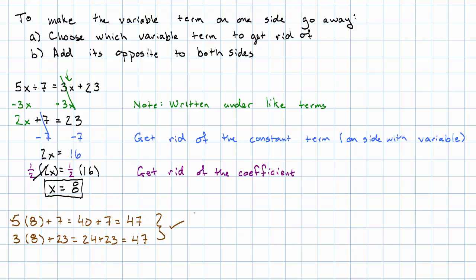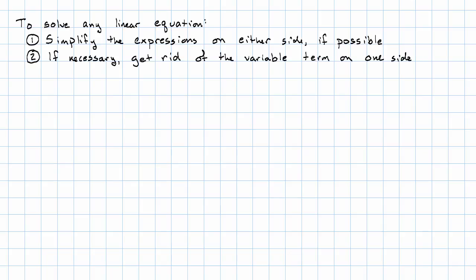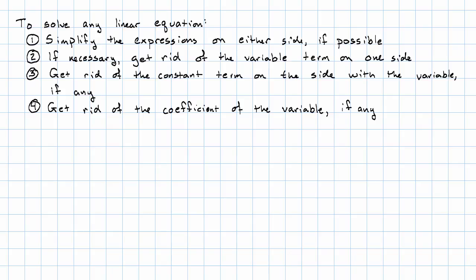So the procedure for solving a linear equation in general: First, we'll simplify the expressions on either side if we possibly can. Then, once they're in simplest form, if there are variable terms on both sides, we'll get rid of the variable term on one side. Once we only have a variable term on one side, we'll get rid of the constant term on the side with the variable. And finally, we'll get rid of the coefficient of the variable, if there is any.